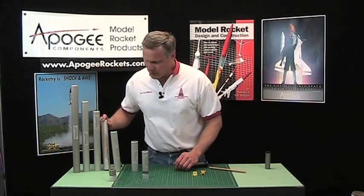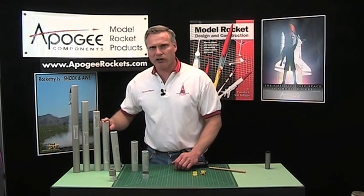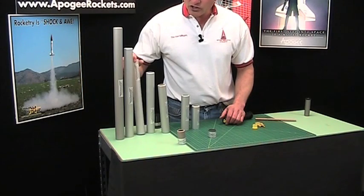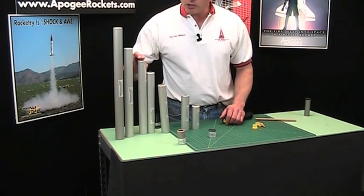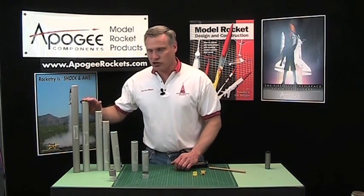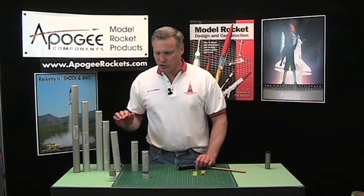The four grain will be kind of a big I motor, like high total impulse. And then the five grain starts your J motors: small J's, big I's, medium-sized I's, or medium-sized J's and huge J's.